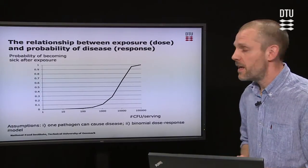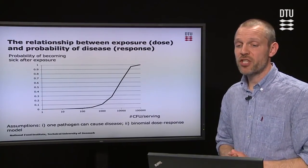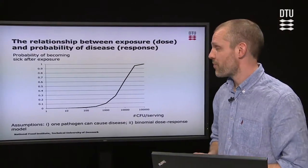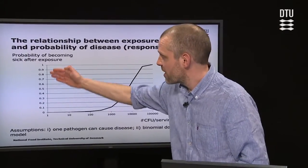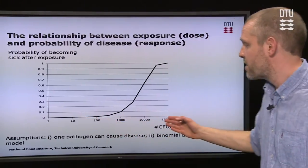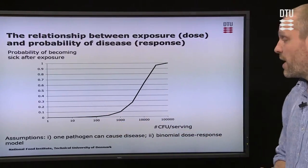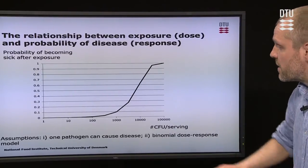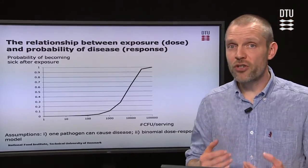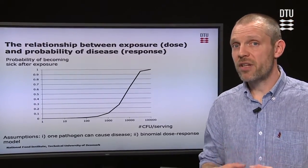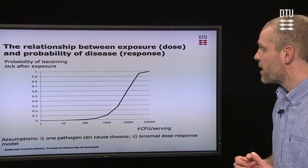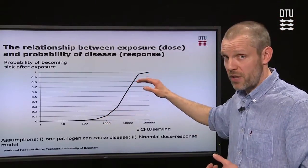This is a graph illustrating the relationship between exposure — the dose — and the probability of disease, the response. The graph has on the vertical axis the probability ranging from 0 to 1, and on the horizontal axis the exposure, what we have estimated in exposure assessment. The shape of this graph is based on typically epidemiological data from different outbreak situations with the pathogen, and when we have the data we can estimate models describing this relationship.